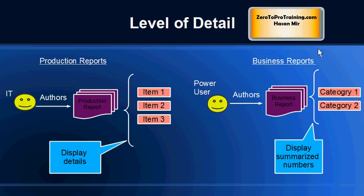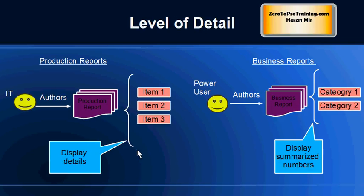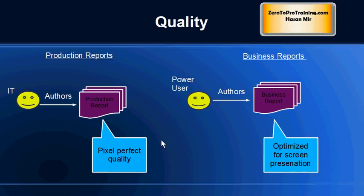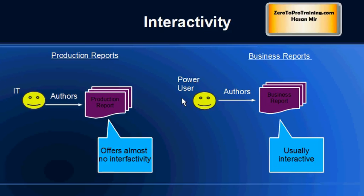Level of detail is another difference: business reports usually give summarized amounts, while production reports give detail-level information. Decision makers are not really interested in, for example, who purchased a laptop in department 10 in February — they are more interested in the total dollar amount spent on laptops across the whole company. Production reports are also tuned to produce pixel-perfect quality regardless of which printer they are sent to, but business reports are more optimized for screen display.